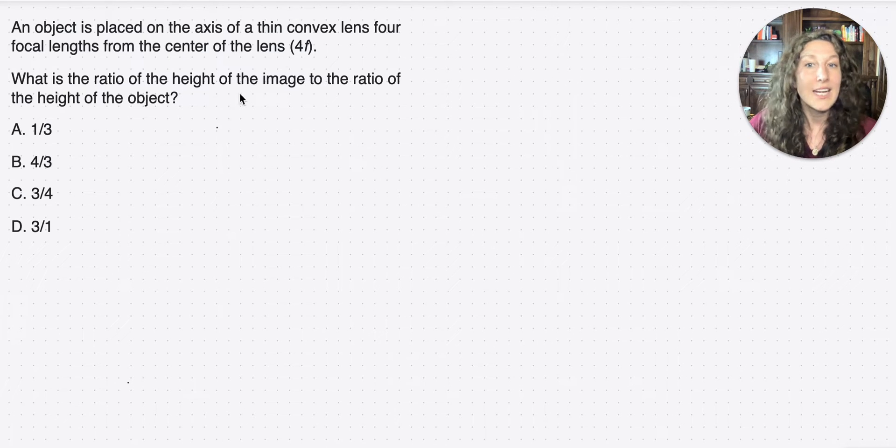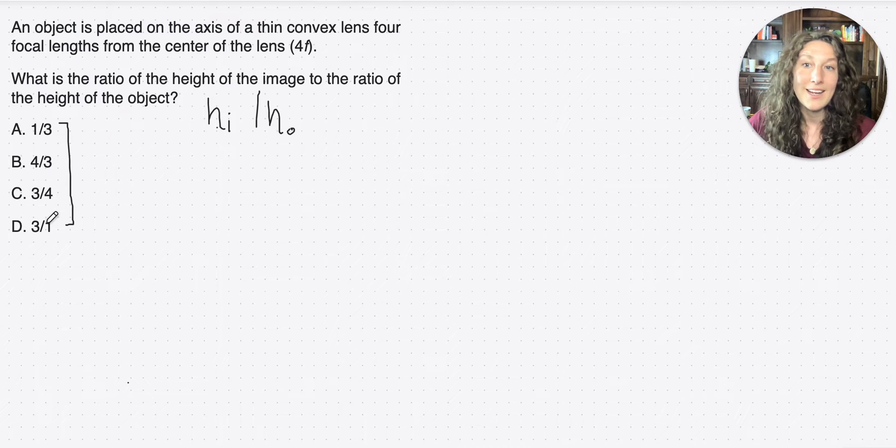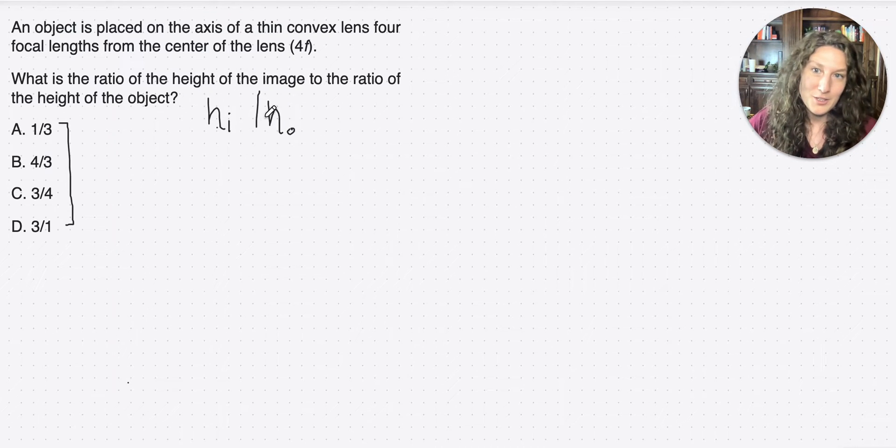So right now they didn't give us any information about the heights, right? They just told us what we were looking for, which is height of image to height of object. And I always write the ratio out in the way that it is written in the answer choices. So that way I remember which value to put on the numerator and which one to put on the denominator. So since the height of the image came first, it goes on the numerator here.